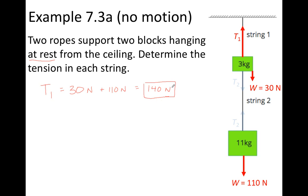Now, if we want to find the tension in string 2, we're going to have to readjust what our system is. We can choose either the 3 kilogram or the 11 kilogram block. I'm going to consider just the 11 kilogram block to be the system, and that would make T2, the tension in string 2, external to our one-block system.